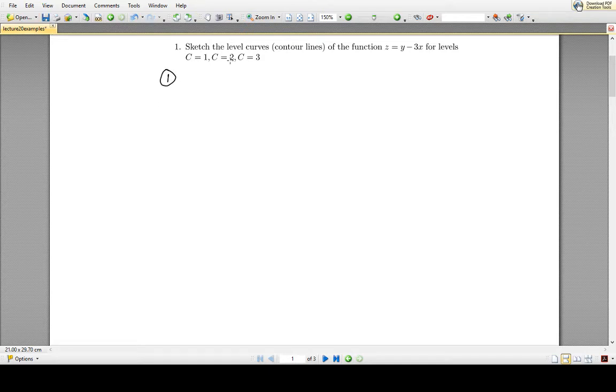So to do this, the first thing we're going to do is for height 1 we're going to substitute in 1 for z. So we get for the level c equals 1, we substitute 1 in for z and we get 1 equals y minus 3x, which when I rearrange this looks like y equals 3x plus 1, which looks like a straight line with slope 3 and y intercept 1. So what this means is if I took this mountain where the height is given by y minus 3x and I sliced it at the height z equals 1, the resulting slice would look like a straight line 3x plus 1.